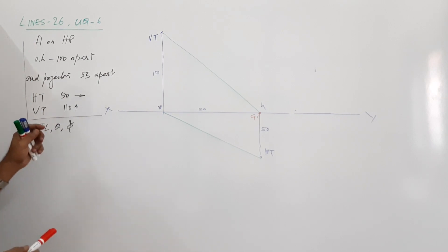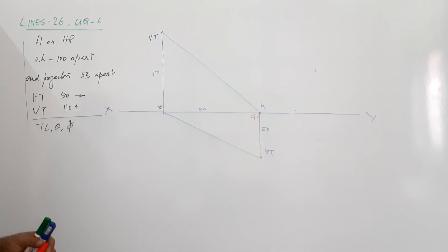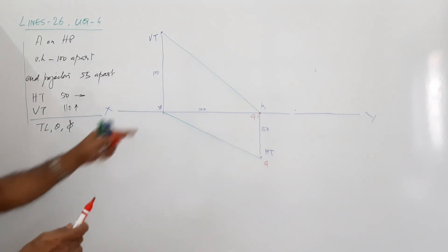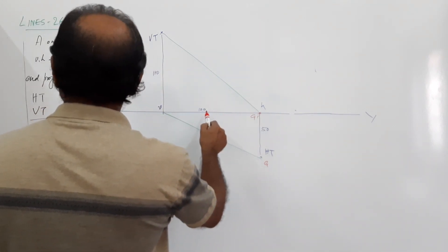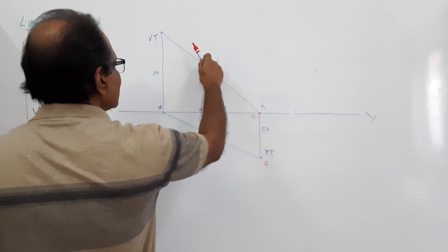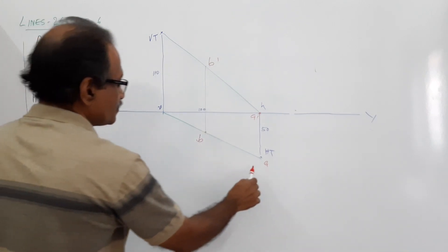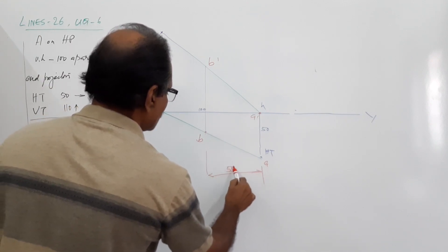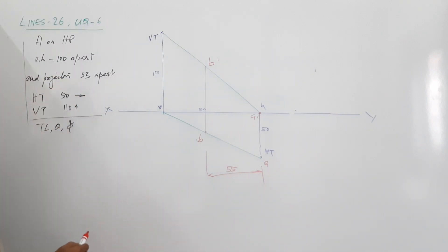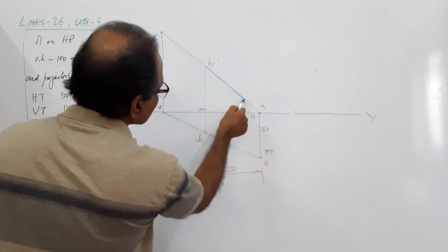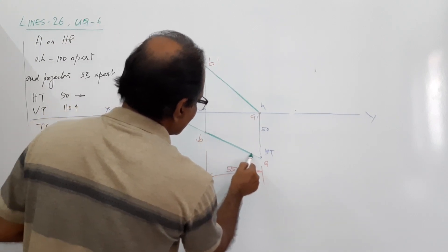If that is A dash, where is the projector of B dash? This is A dash. If A dash is located and the projectors of A and B are 55 mm apart, draw a projector 55 mm away — this gives B, and this is B dash. This gives us the final elevation and the final plan.